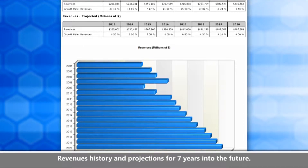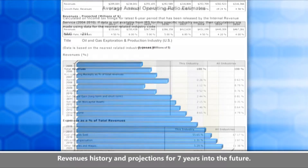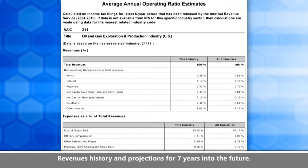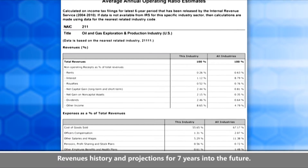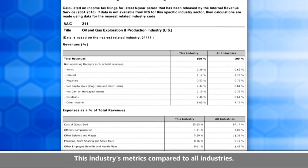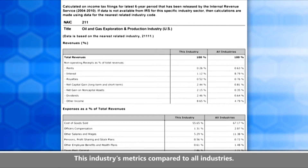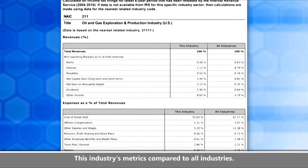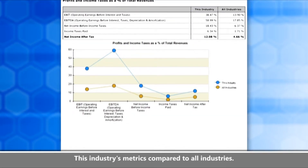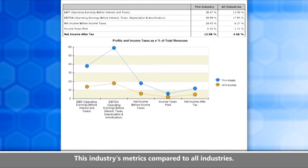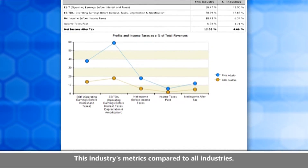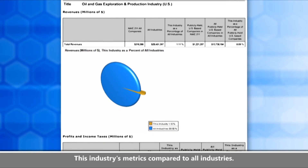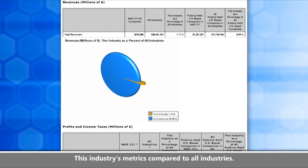Again, we're using DataViz to give you a good chart. One of the things we do over and over again in this report is compare averages for this specific industry to averages for all industries. For instance, we're giving you revenue and operating ratio estimates as an average for this industry so you can compare it to all industries — for example, how does this industry's cost of goods sold compare to that for all industries?